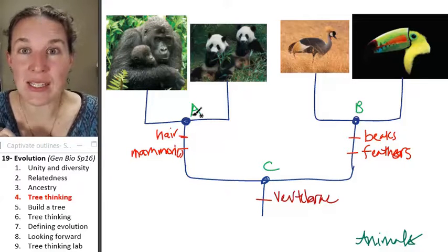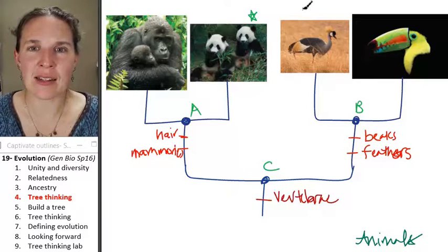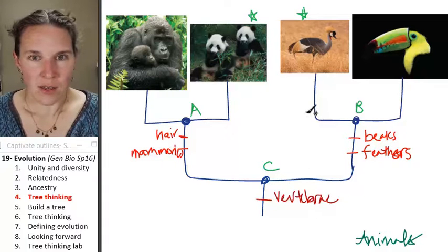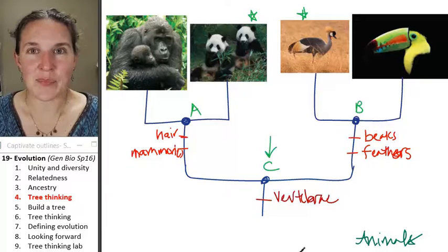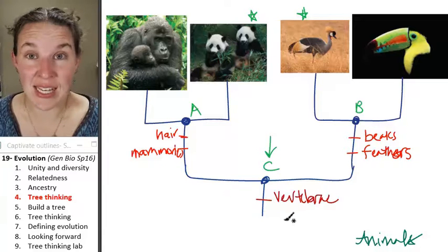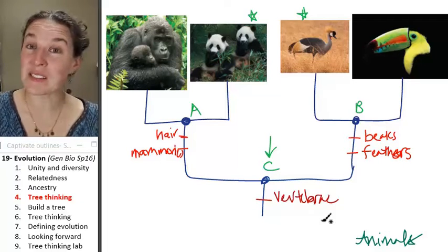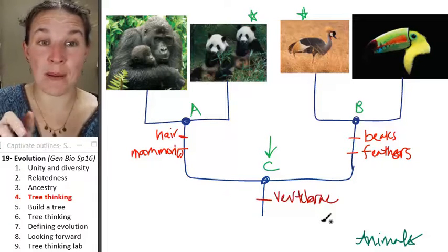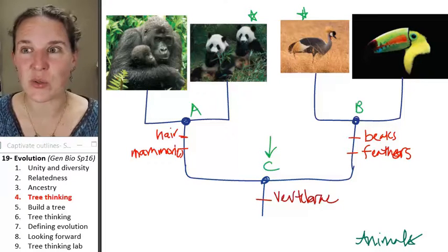What's the most recent common ancestor shared by panda and crown crane? Follow it back, follow it back. It's got to be C. What's the characteristic that that ancestor probably had? And then vertebrae. That is building a tree. You can think about your trees and think about how closely things are related to each other.